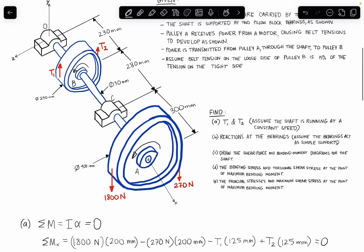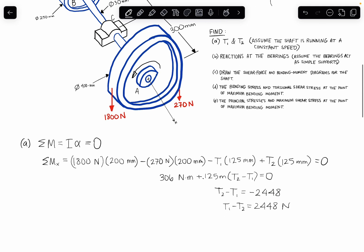Okay, and then the other piece of this that we have to use to solve for these two variables is this assumption that the belt tension on the loose side of pulley B is 15% of the tension on the tight side. So that tells us that T2 is 15% of T1, so that's 0.15 times T1.